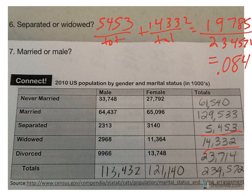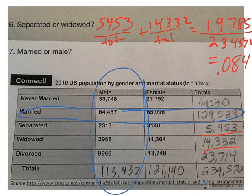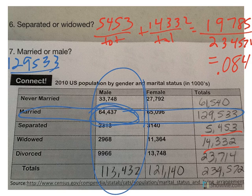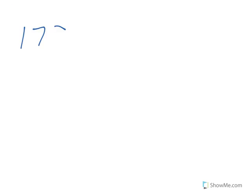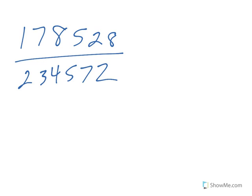Number seven: probability of married or male. Here we do have an overlap. So if I take married — 129,533 — over the total, plus males — 113,432 — over the total, I subtract the overlap of 64,437 over the total. That gives me 178,528 over 234,572, which is .761. So 76.1% of U.S. citizens are either married or male.